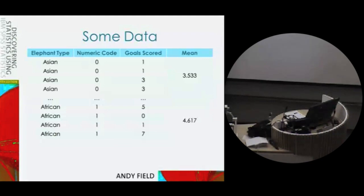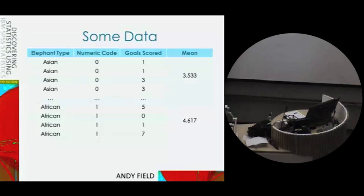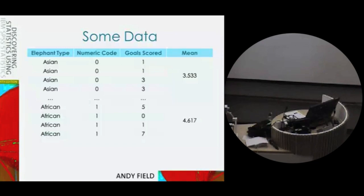If we want to put a categorical variable into a linear model — say, predicting the number of goals scored based on whether the elephant was from Asia or Africa — we need to assign some kind of numerical codes to the groups. We can't put letters into a linear model; we have to put numbers in. One important way of doing this, especially in regression, is to use zeros and ones — binary coding.